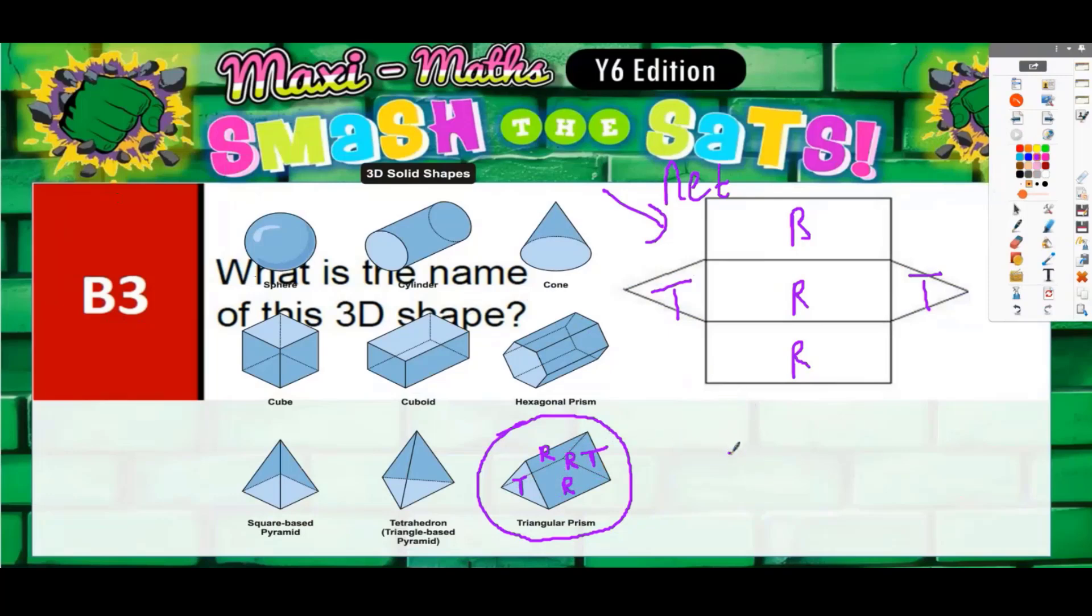So the shape that we're trying to think of is a triangular prism. It can't be a triangular pyramid or triangular-based pyramid, because on this one there are no rectangles - this shape is just four triangles.